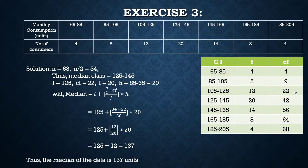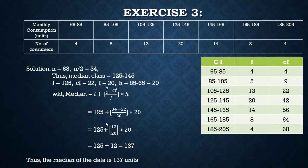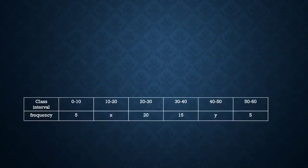The cumulative frequency of the class preceding the median class is 22, the frequency of the median class f = 20, and h = 145 − 125 = 20. Substituting: Median = 125 + (34 − 22)/20 × 20 = 125 + 12 = 137. So the median is 137 units.